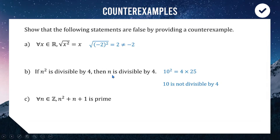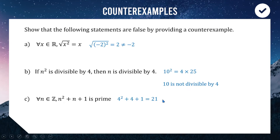For the third one: 'for all integers, n² + n + 1 is a prime number.' The first integer I checked that didn't work was 4. If we do 4² + 4 + 1 = 21. Even though it's an odd number, it is not prime because it equals 3 × 7. So there is our counterexample, and the statement is not true for all integers.